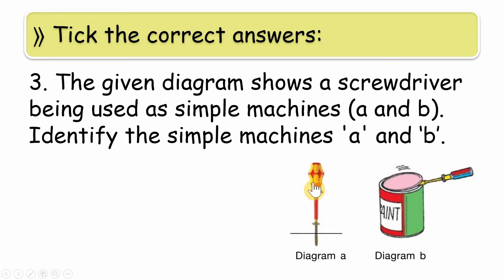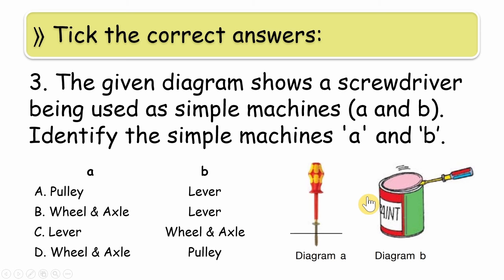Third question: the given diagram shows a screwdriver being used as a simple machine A and B. That means it's being used in different ways. Here, how are we using it? To drill the screw or insert it inside. And here, how is the screwdriver being used? To remove it. So depending on the use, the type of simple machine also changes. The options are: A is pulley, B is lever, or A wheel and axle B lever, A lever B wheel and axle, or A wheel and axle and B pulley.